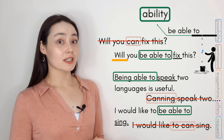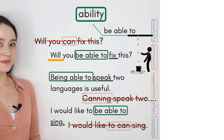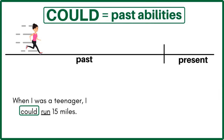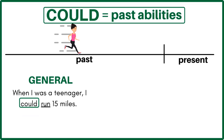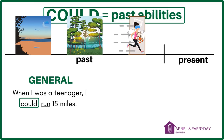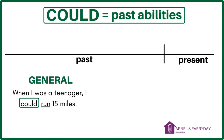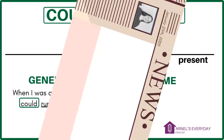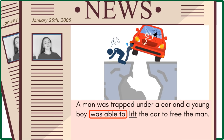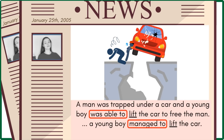Before moving to possibility, let's get more specific about past ability. We know 'could' is used for general past abilities — things you could do whenever you wanted. 'When I was a teenager, I could run 15 miles' — in the morning, in the afternoon, any time. But if someone had the ability to do something just one time in an affirmative sentence, use a different expression: 'A man was trapped under a car and a young boy was able to lift the car to free the man.' Or: 'A young boy managed to lift the car.' Saying 'A young boy could lift the car' is not so natural.